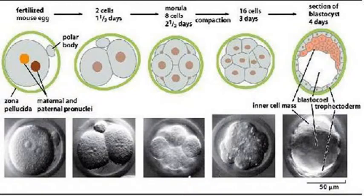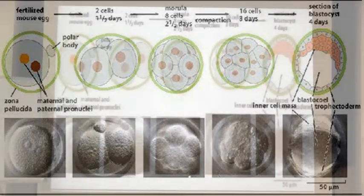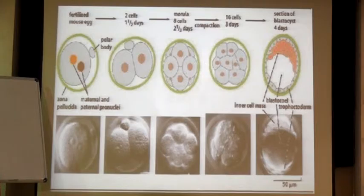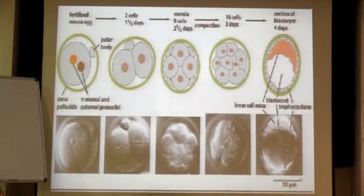The cells formed during cleavage are known as blastomeres — generally the smaller ones are called micromeres and the larger ones are called megameres or metameres. This whole process goes in even numbers — you are going to have 2-cell stage, 4-cell stage, 8, 16, 32, 64, and so on.